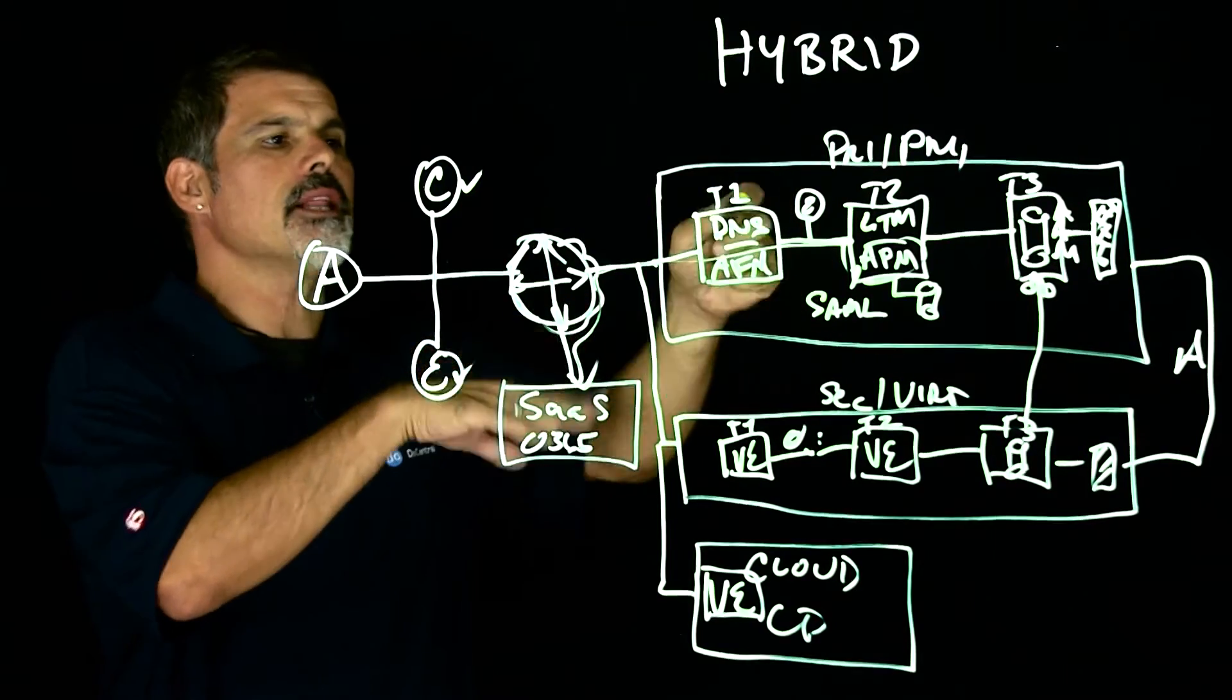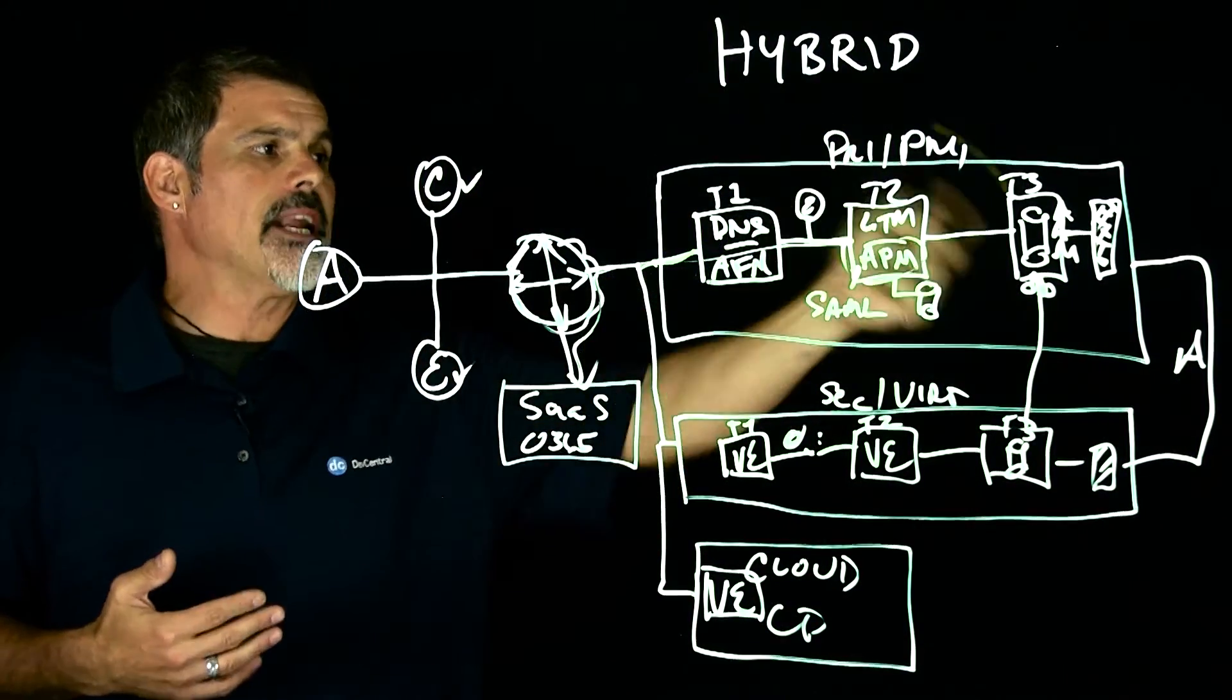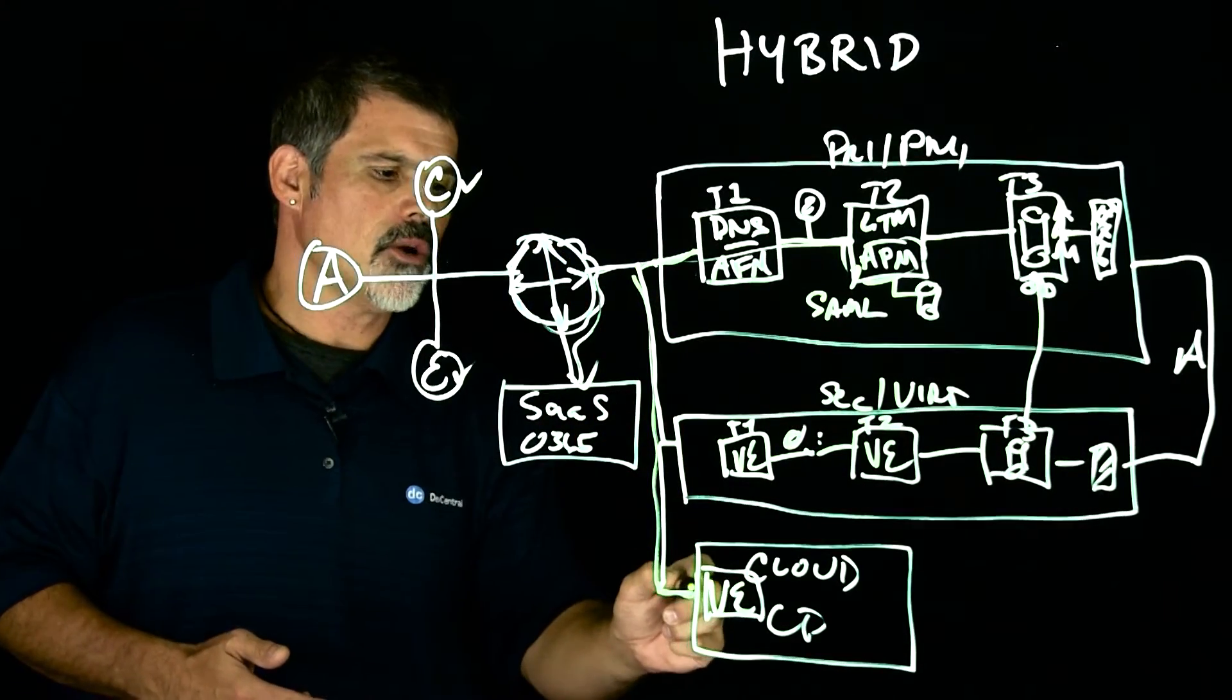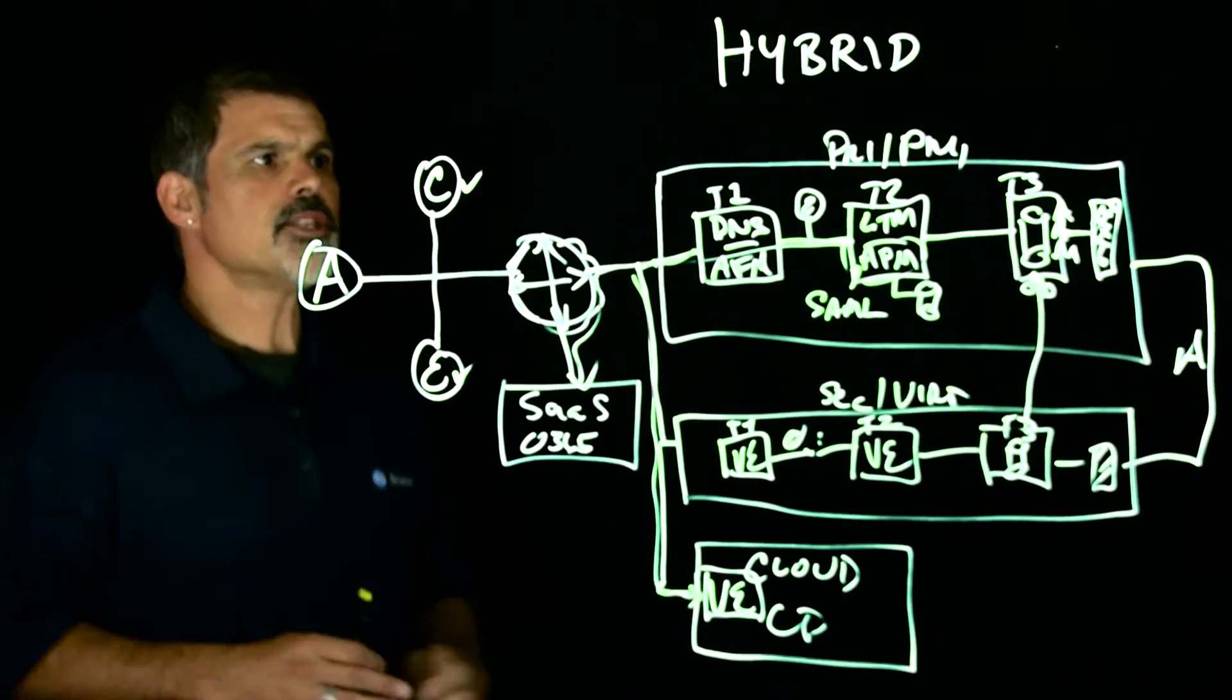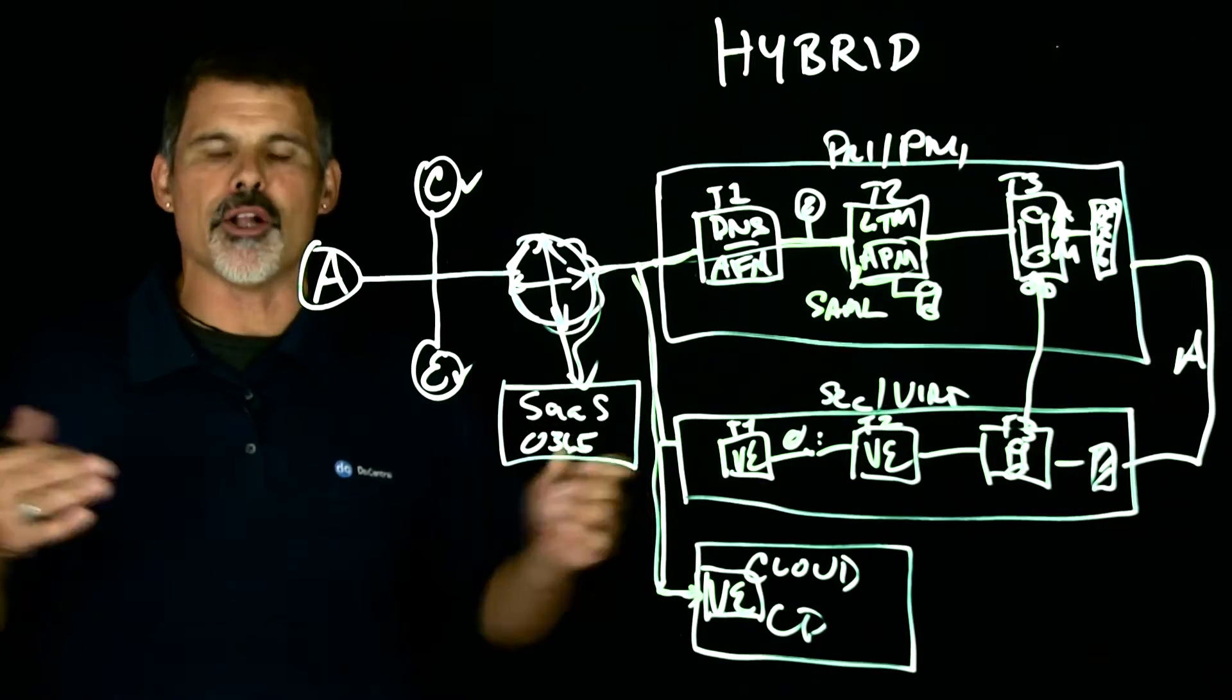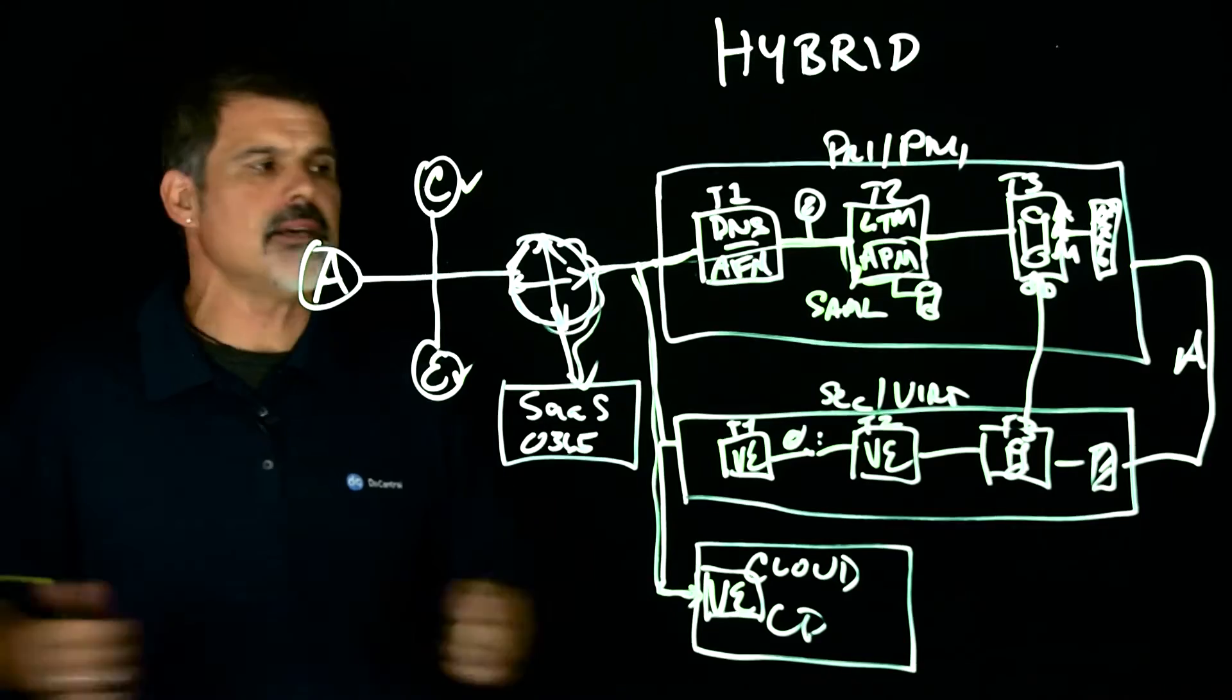And then finally, with the cloud and the DNS resolution, there may just be instances where, depending on the application or depending on the request, the DNS will send them down to the cloud resource. And so really, this is all about the flexibility and the ability to scale, to expand and retract back, expand out when you need capacity.